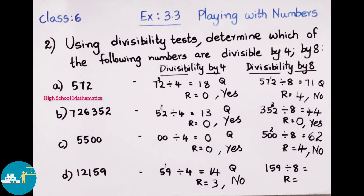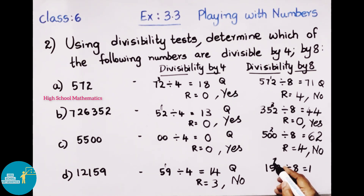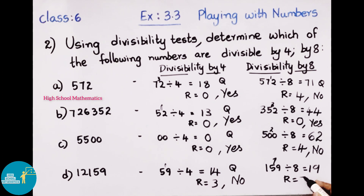Checking if 12,159 is divisible by 8. Last 3 digits are 159. Dividing 159 by 8: 8 times 1 is 8; 15 minus 8 gives remainder 7. Bring down 9, making 79. 8 times 9 is 72; 79 minus 72 gives remainder 7. Since remainder is 7, 12,159 is not divisible by 8.